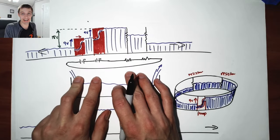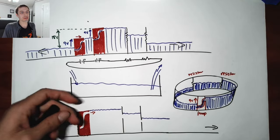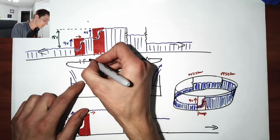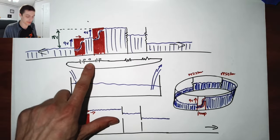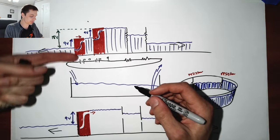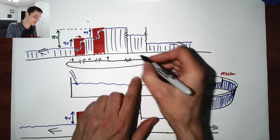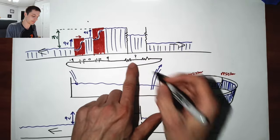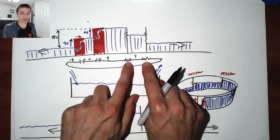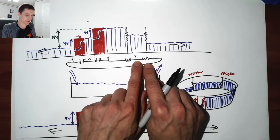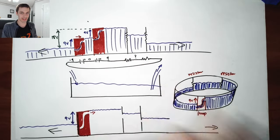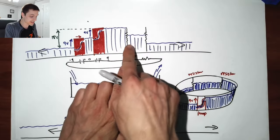Voltages are always relative, so you can pick a voltage to be zero wherever you want. Let's say the voltage is zero in between these two batteries — that would mean this side is positive nine volts and this side is negative nine volts. Then depending on the values of these resistors, the middle is going to be some mystery voltage. This is called a resistive divider. If both resistors are the same value, the voltage in between is going to be zero volts. But if one is bigger, it's going to pull it one way — the exact same thing you can see in the water model.